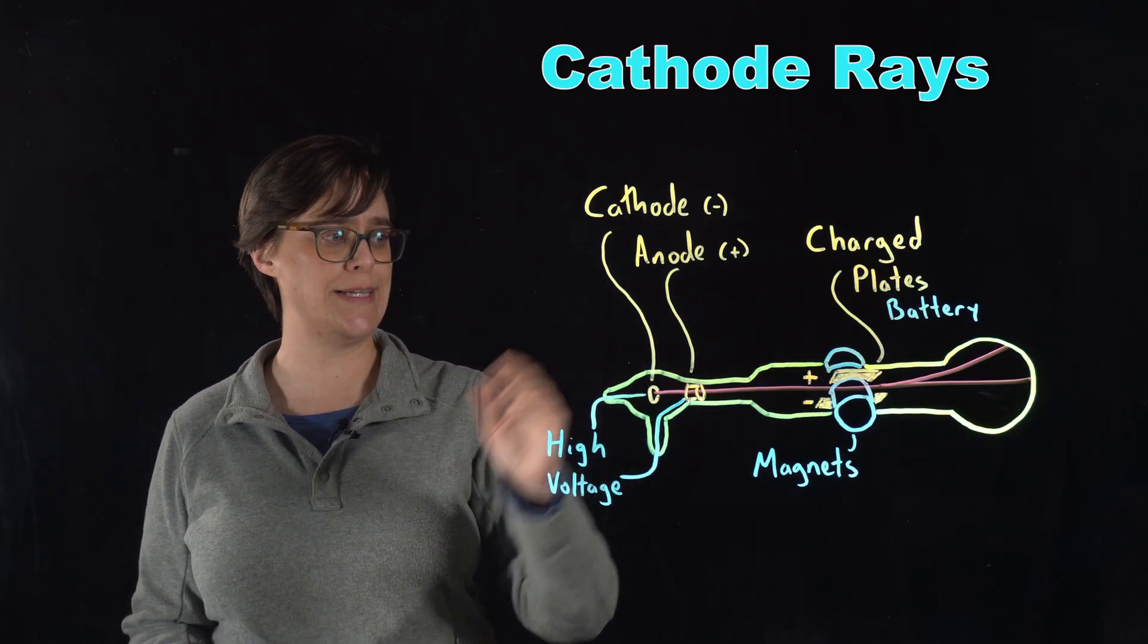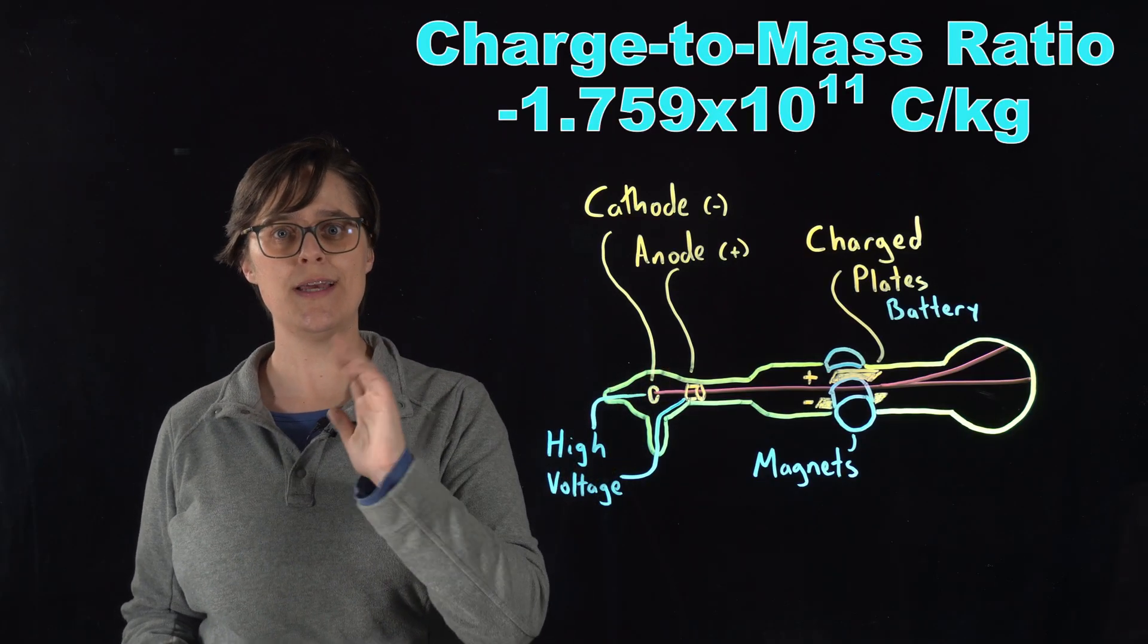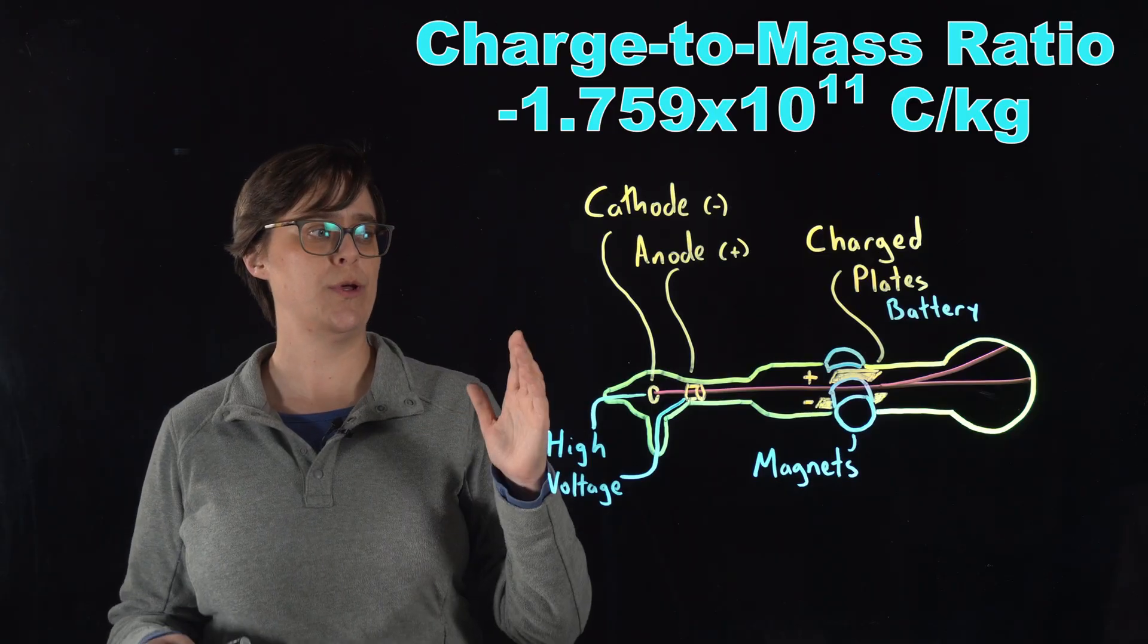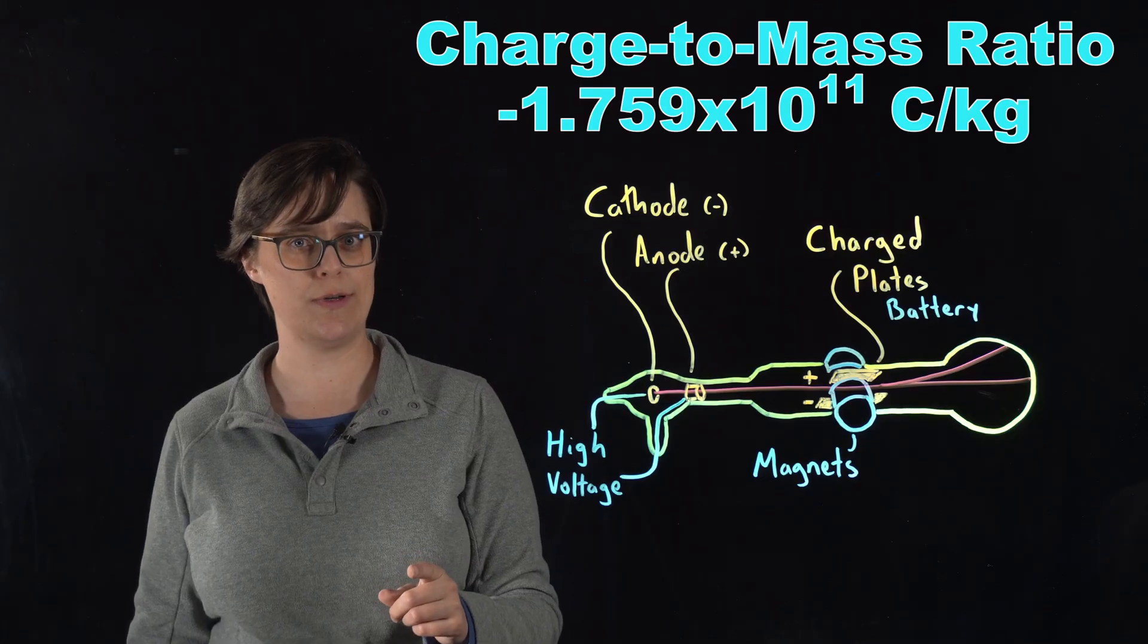And we've also started calling these cathode rays electrons. He discovered electrons. In other words, we don't know the charge or the mass of electrons, but we know the ratio of those two values.